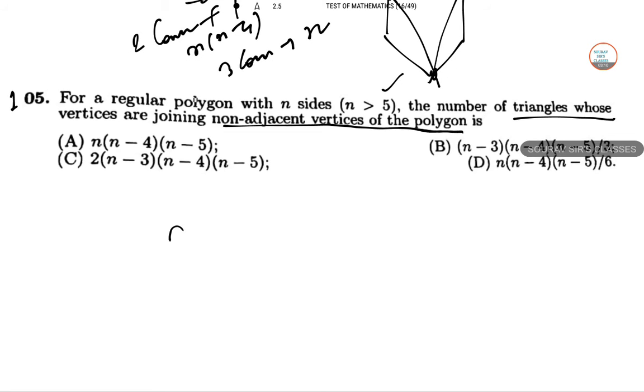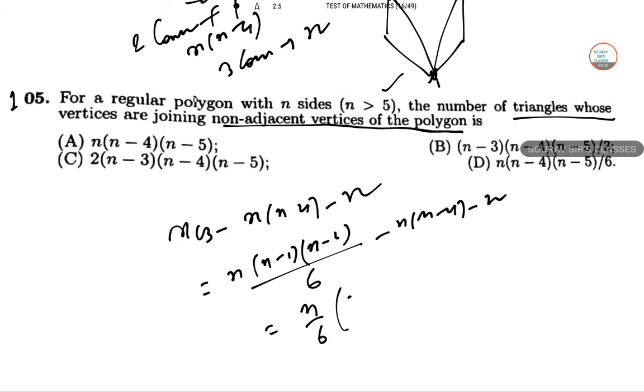So the required triangles are nC3 minus N(N-4) minus N. This equals N(N-1)(N-2)/6 minus N(N-4) minus N, which simplifies to N by 6 times (N² - 9N + 20), or N(N-4)(N-5)/6.